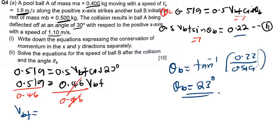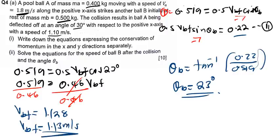That gives VB_final = 1.128, which to 3 significant figures is 1.13 m/s. I was expecting this to be less than 1.1, and I'm not sure where I went wrong, but this appears to be the correct answer. Try to follow the same principle and see if you get 1.13. In most cases VB will be less, but not in this case.